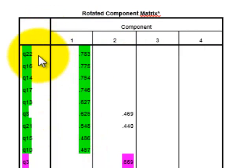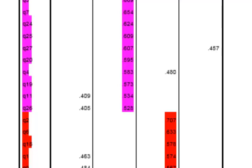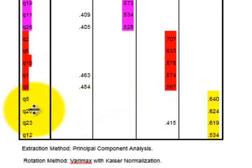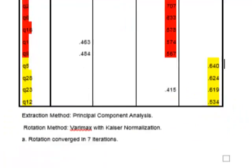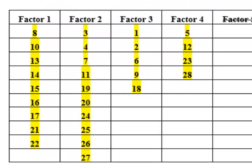What it does is it lists each individual question under which factor it should belong to. So these questions here, question 22, 16, 14, all the way down to question 10 should be loaded up under factor 1. And these questions should be loaded under factor 2. These questions should be loaded under factor 3. And these last couple of questions should be loaded under factor number 4. I just put them into an easier table for you to read.